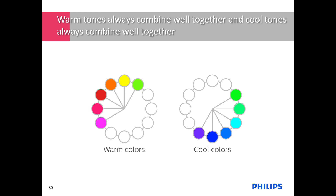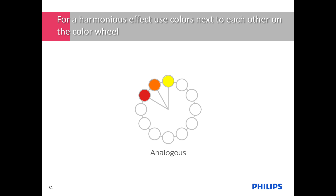For example, all warm colors combine well together, and all cool colors combine well together. For a harmonious effect, use colors next to each other on the color wheel — this is called analogous. The more neighboring colors are combined, the more outspoken the color harmony will be. You can use this to create a lively and uplifting scene, like in the Happy theme, or to be expressive, as in the Imaginative theme.